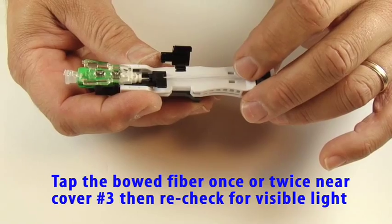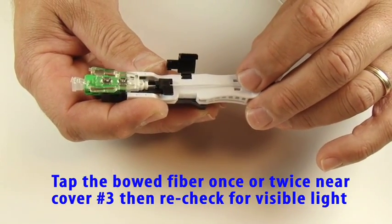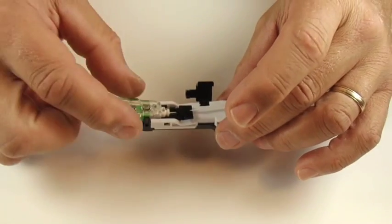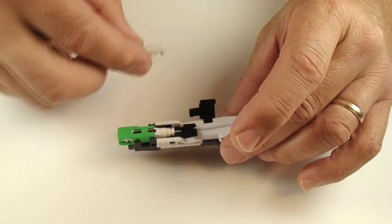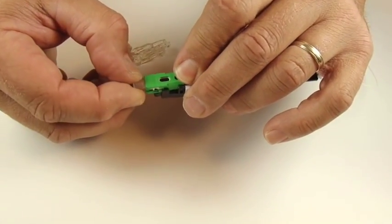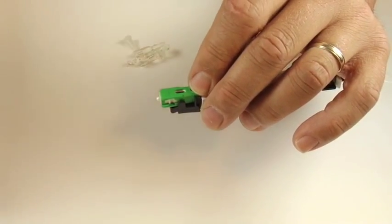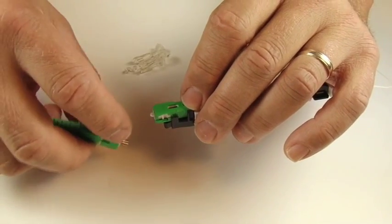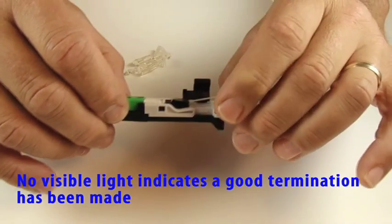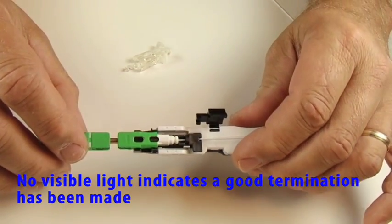Tap the bowed fiber once or twice near cover number three and then recheck for visible light using the visible fault locator. No visible light indicates a good termination has been made.